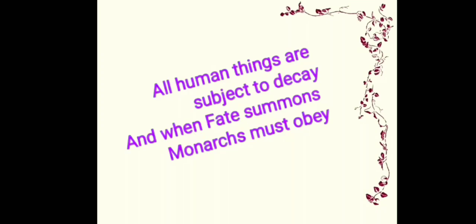The poetry starts with these lines: 'All human things are subject to decay, and when fate summons, monarchs must obey.' This means that everything — any human being who has taken birth — has to die one day. Everything has to decay. We are born to die. Everyone has their lifespan, a specific time in this world, and then they have to go. When fate summons, when the time comes, even if you are a monarch, even if you are a king, you have to obey.